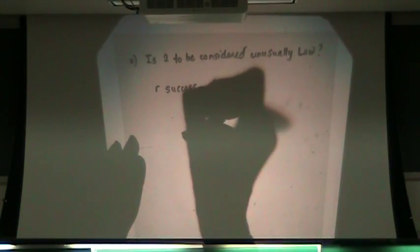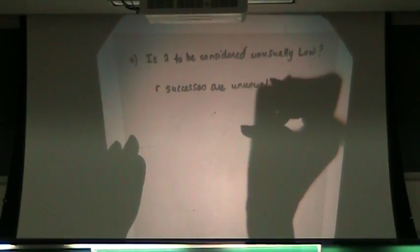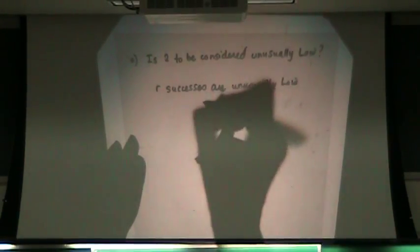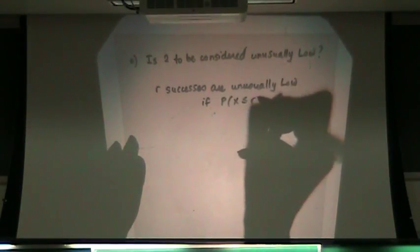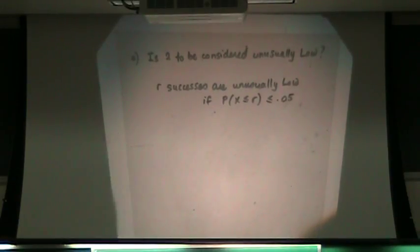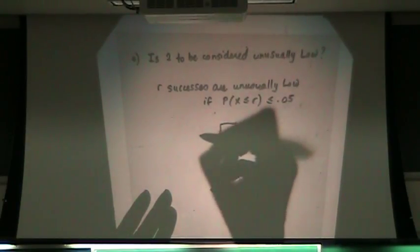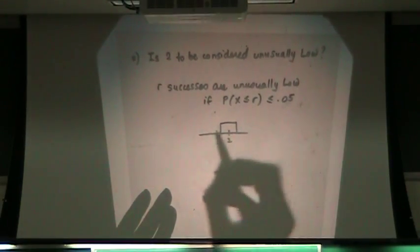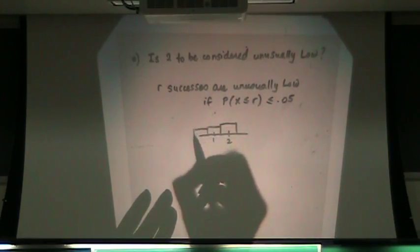What do you think? The rule is r successes are unusually low if the probability of X less than or equal to r is less than or equal to 0.05. In other words, now go more extreme into the left tail. So I'm interested in probability of two, or one, or zero.